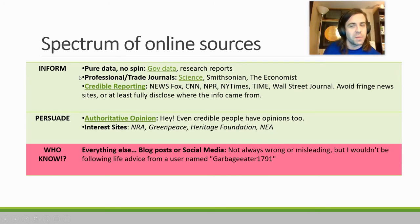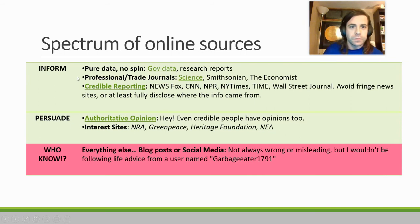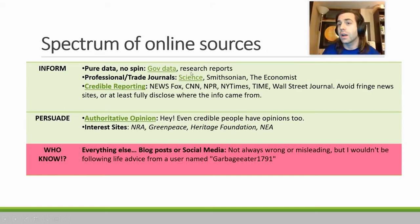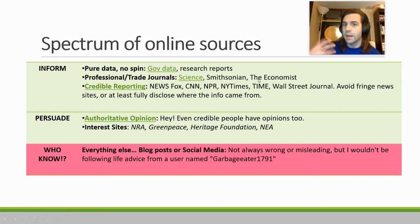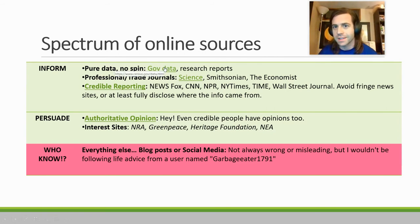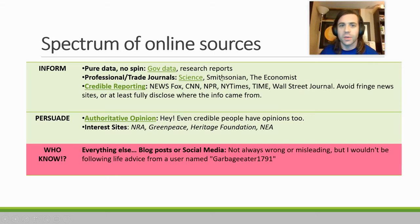A step down from that pure information — because very few of us can actually process it, since it's written for scientists — are going to be those professional or trade journals. These are magazines and publications that employ either journalists or scientists to write about happenings in the world in a way that a large portion of the population can understand. I can't understand census data, but someone from The Economist can write an article about it that I can understand, or The Smithsonian, or Science Magazine.